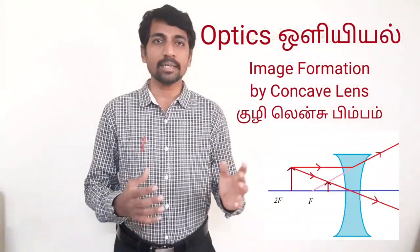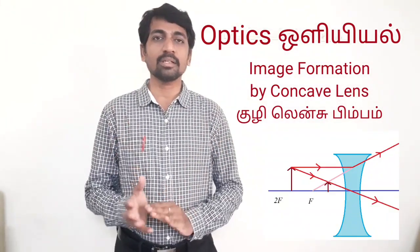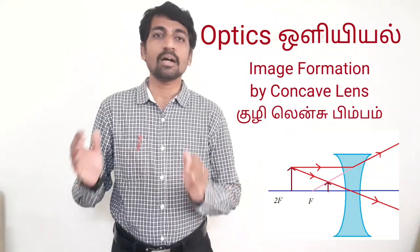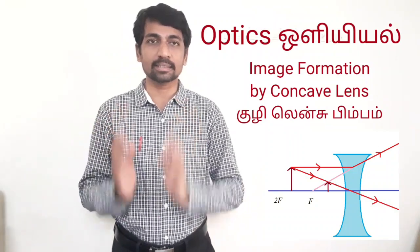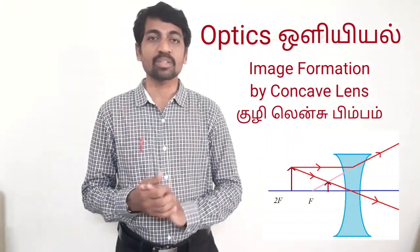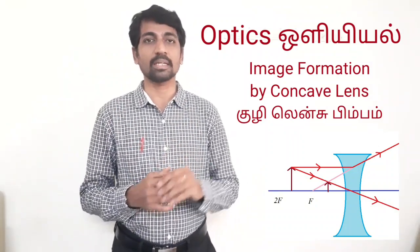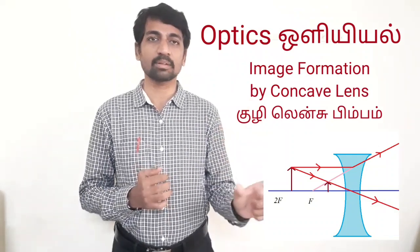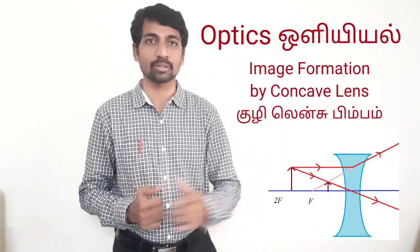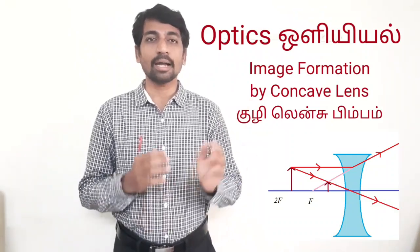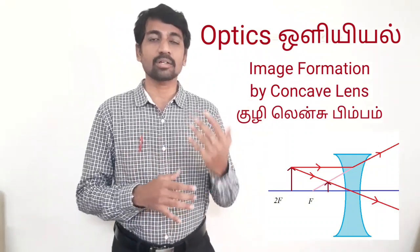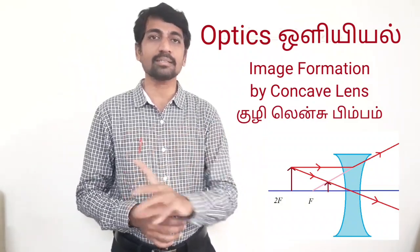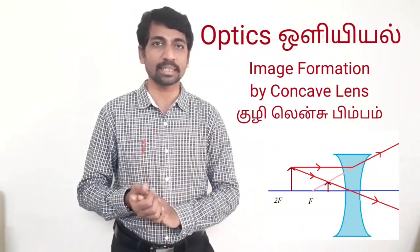In the second case, we will place the object at a finite distance. The image is formed between the optical center and the principal focus. This is a virtual image, and the size is much smaller than the size of the object.